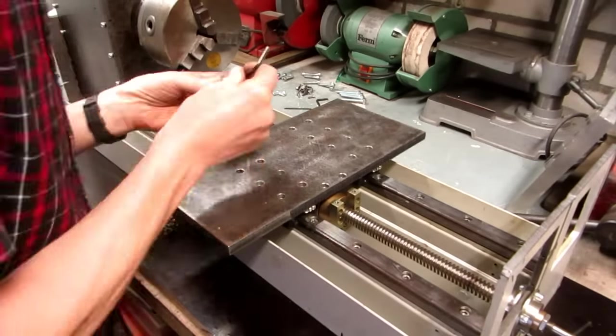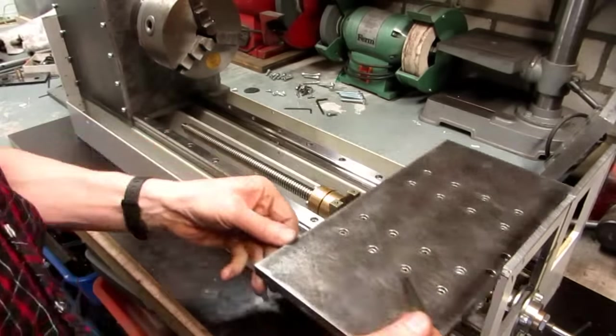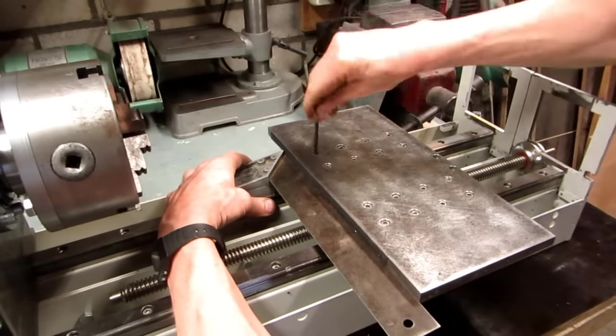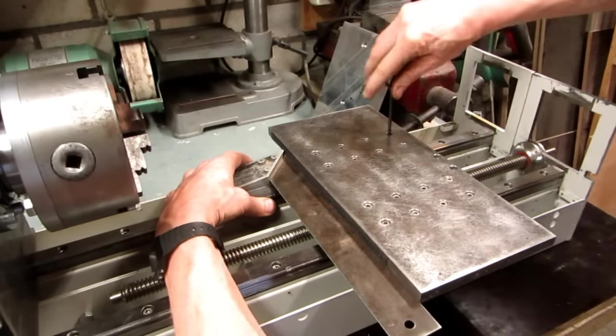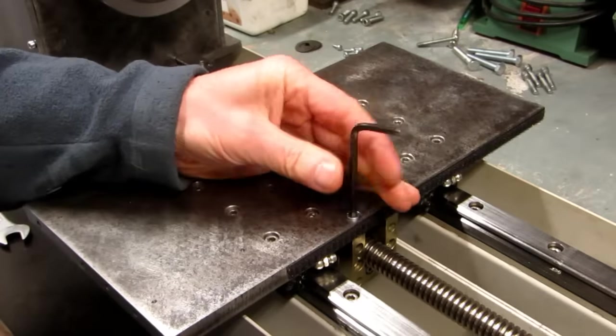Now the carriage plate is mounted onto the linear bearing blocks. It is important that the carriage plate is at 90 degrees to the linear rails. The carriage can now be bolted to the lead screw nuts.